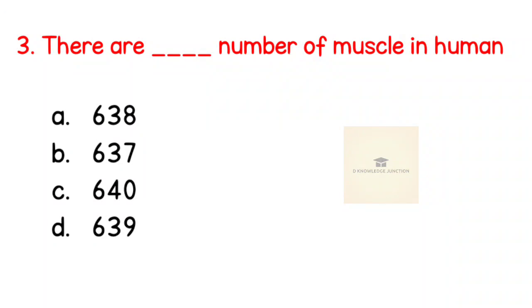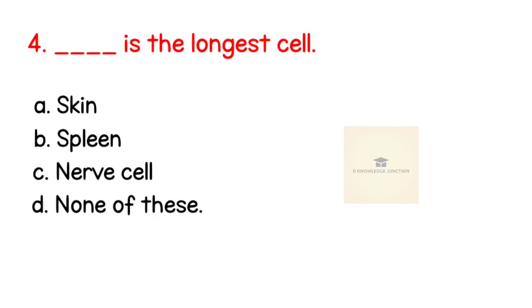Third question: There are a number of muscles in human. Right answer is 639. Fourth question: The longest cell is? Right answer is nerve cell.